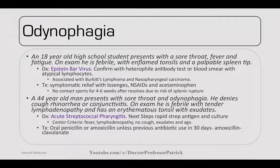An 18-year-old high school student presents with sore throat, fever, and fatigue. On exam, febrile with inflamed tonsils and a palpable spleen tip. This can be Epstein-Barr virus (mono). Confirm with a heterophile antibody test or blood smear showing atypical lymphocytes. It's associated with Burkitt's lymphoma and nasopharyngeal carcinomas. Treat with symptomatic relief using lozenges, NSAIDs, and Tylenol. No contact sports for four to six weeks due to the risk of splenic rupture.